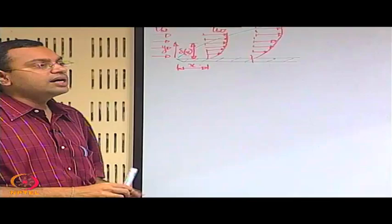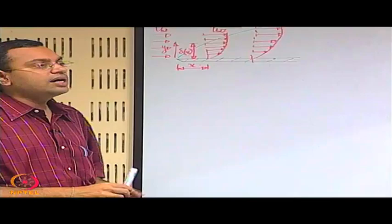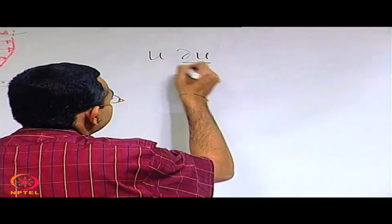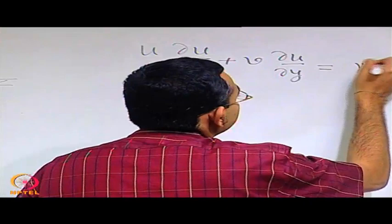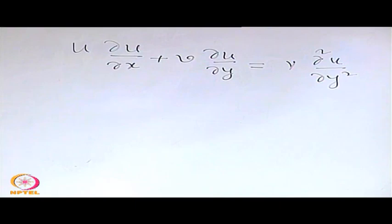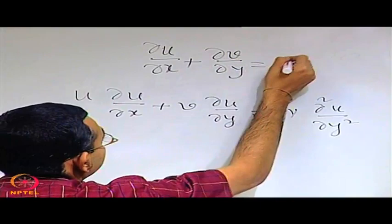To understand how that might be possible, let us rewrite the momentum equation — we are still considering the flow over a flat plate. That is the momentum equation we were dealing with. Our objective is to solve this equation. Keep in mind that it is not just one equation with two unknowns, because you also have the continuity equation to support the momentum equation.